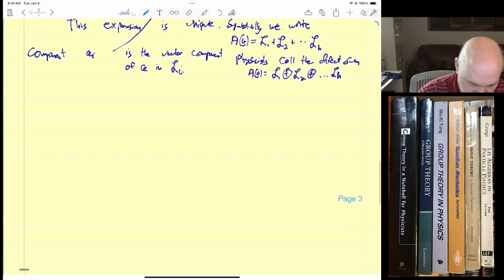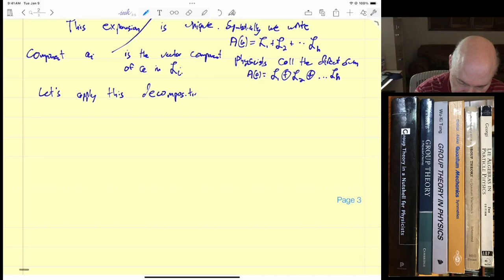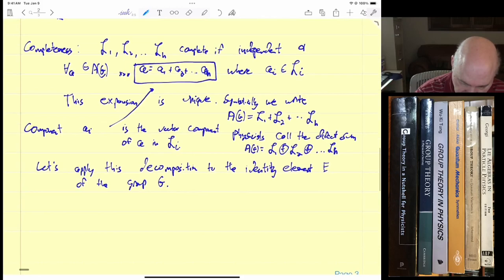So now we can do a little bit of math. So let's apply this decomposition to the identity element E of the group G. So multiplying this equation over here, multiplying that equation by E, we would get, applying it to E, setting A equal to E, we would get E equals E1 plus E2 plus EH, where EI is in LI. I'll box this equation as well.